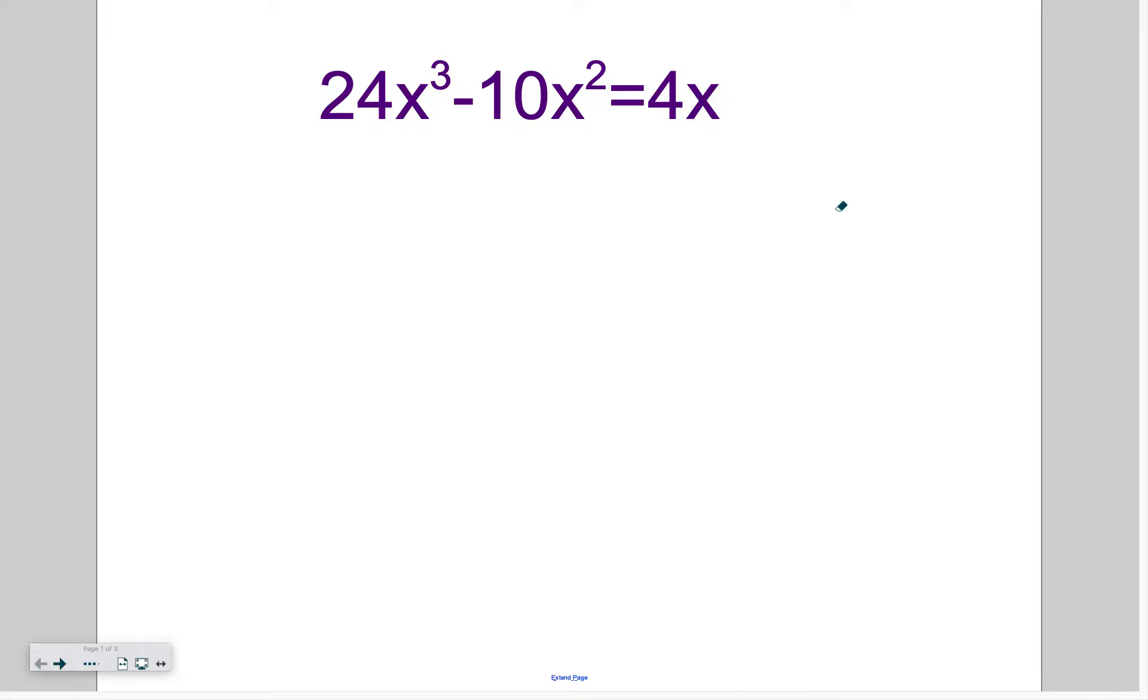So what we're going to do is we're going to put it into standard form. So I'm going to write this as 24x³ - 10x² - 4x = 0. So we're going to try and solve this first. We can't take the square root. Is this factorable? Now, when you're factoring, we always follow that factoring flowchart process, which means we should look for a GCF at the beginning.